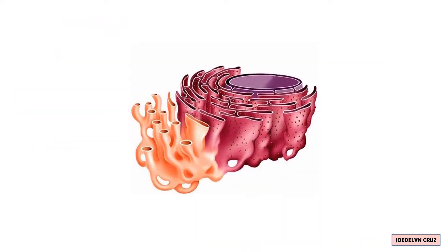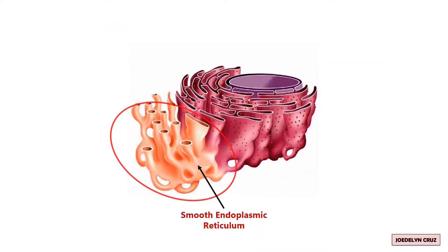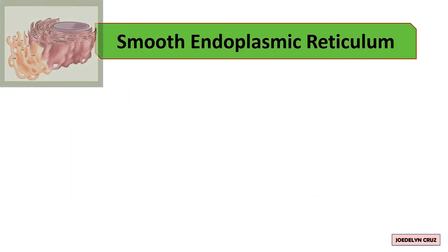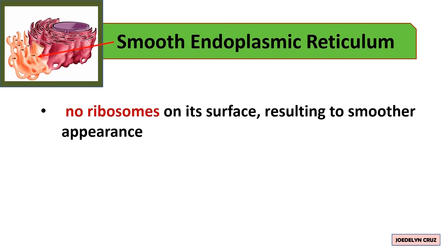This is a close-up view of the smooth endoplasmic reticulum. The smooth ER has no attached ribosomes on its surface, resulting in a smoother appearance.